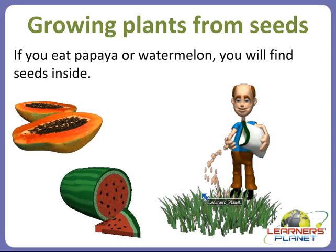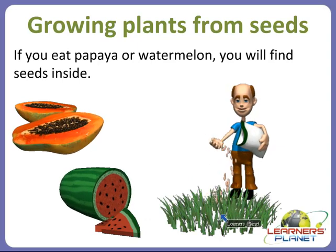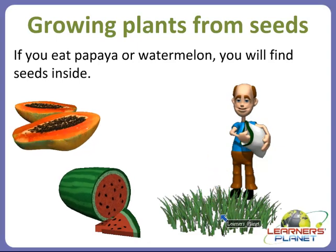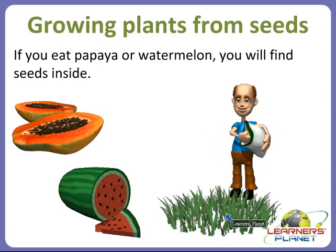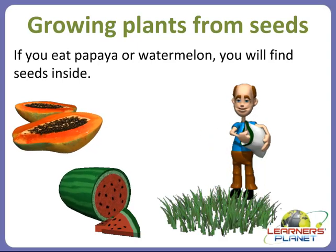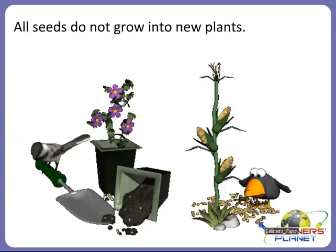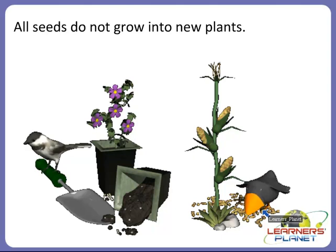An outer covering called the seed coat protects the baby plant inside the seed. As you can see here, a man is scattering seeds, and after some days we see that plants grow from them. A seed has an outer covering which protects the baby plant inside — this is known as the seed coat. The seed coat also has a tiny hole through which the seed gets water.